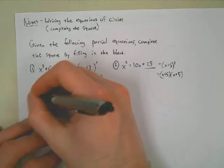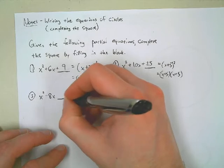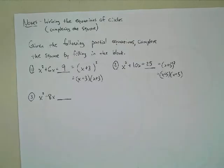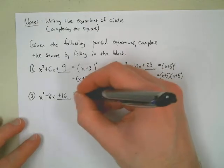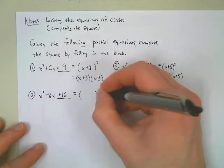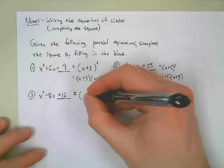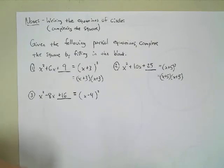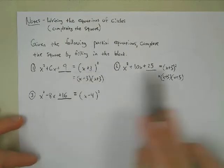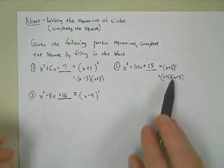Let's try one more. How about x squared minus 8x? The blank is going to be plus 16, positive 16. And that's going to be a perfect square of x minus 4, quantity squared. We need minus 4 because we have a negative 8x middle term but a positive 16.